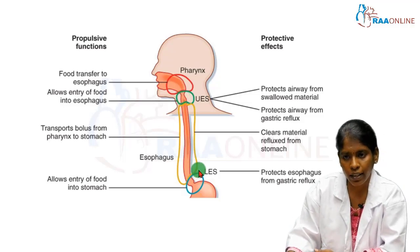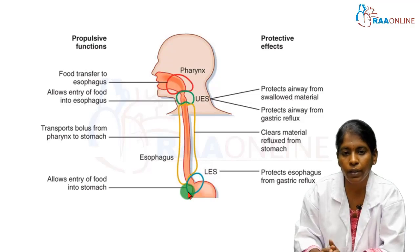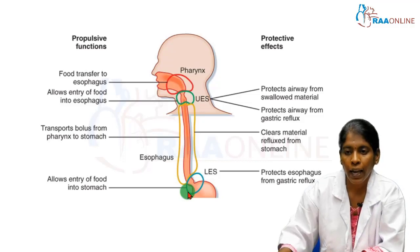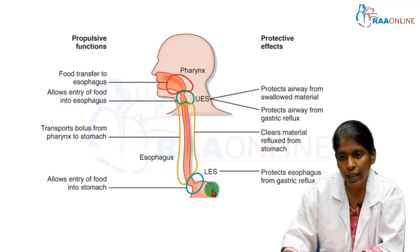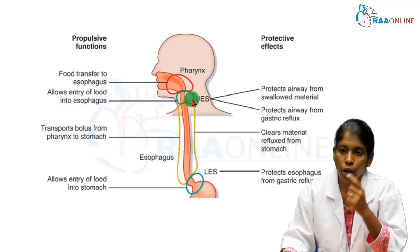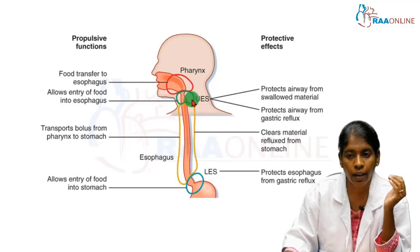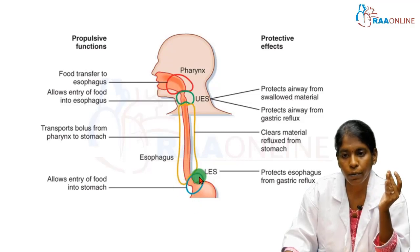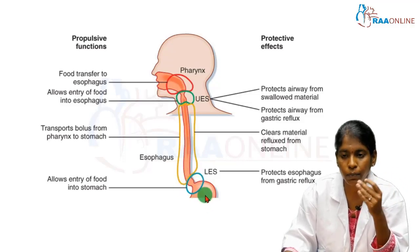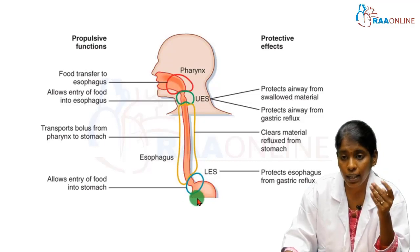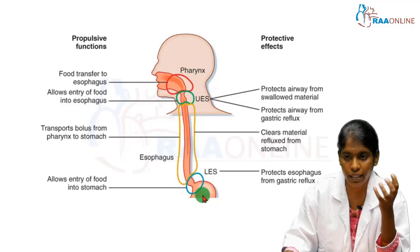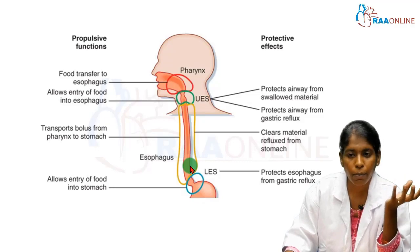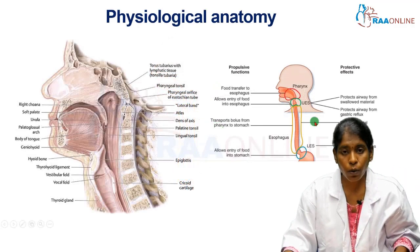The lower esophageal sphincter also remains closed between swallows. When we do not swallow food, the lower esophageal sphincter remains in the closed state, preventing reflux of acidic gastric contents into the esophagus. If acidic gastric contents reflux from the stomach into the esophagus, this can erode the esophageal mucosa, resulting in inflammation and ulcers. That is all about the physiological anatomy.